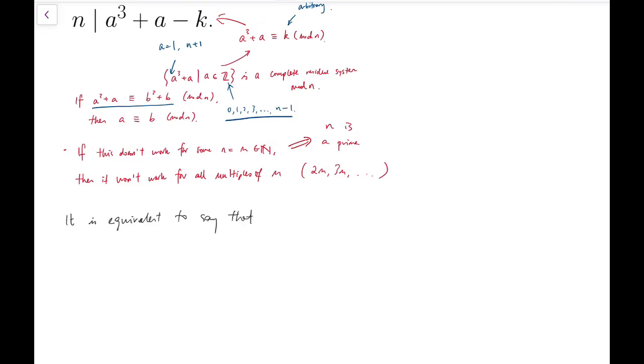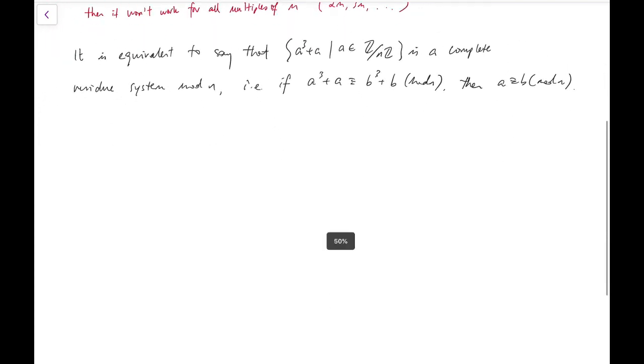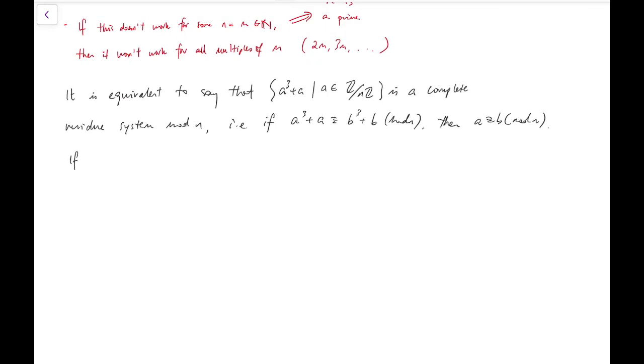It is equivalent to say that a³ + a mod n is a complete residue system mod n, which means if a³ + a ≡ b³ + b (mod n) then a ≡ b (mod n), which is exactly what I've written above. And the next part is that, is to again copy this statement again.